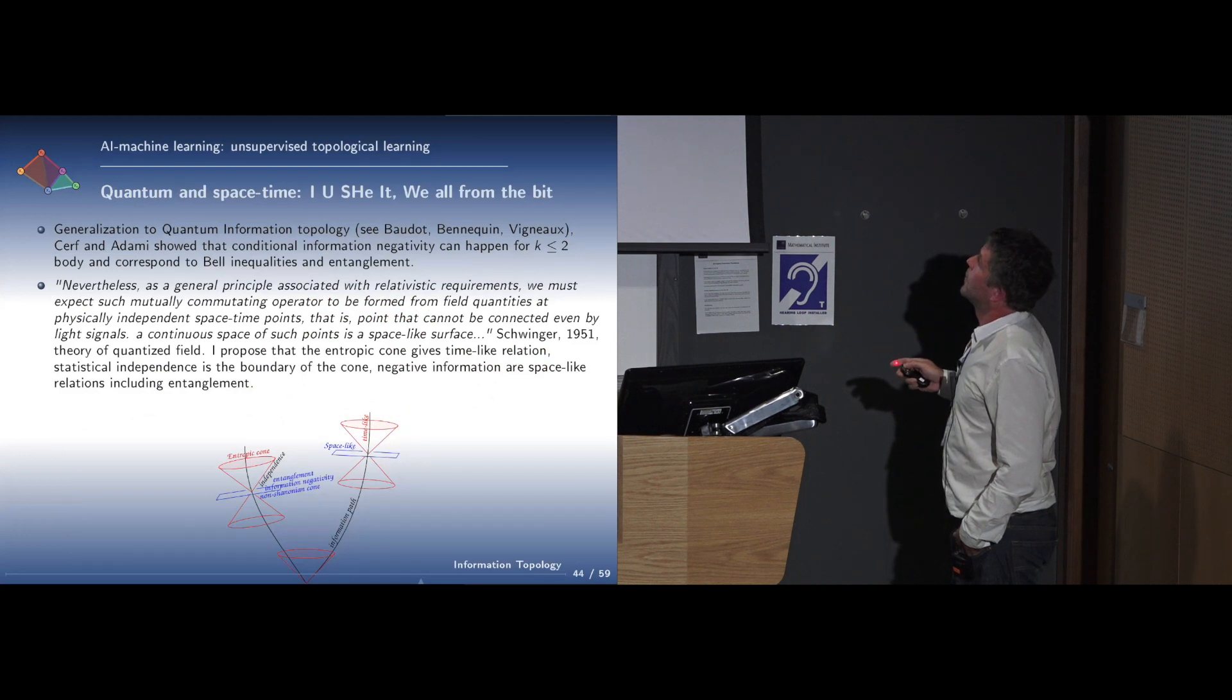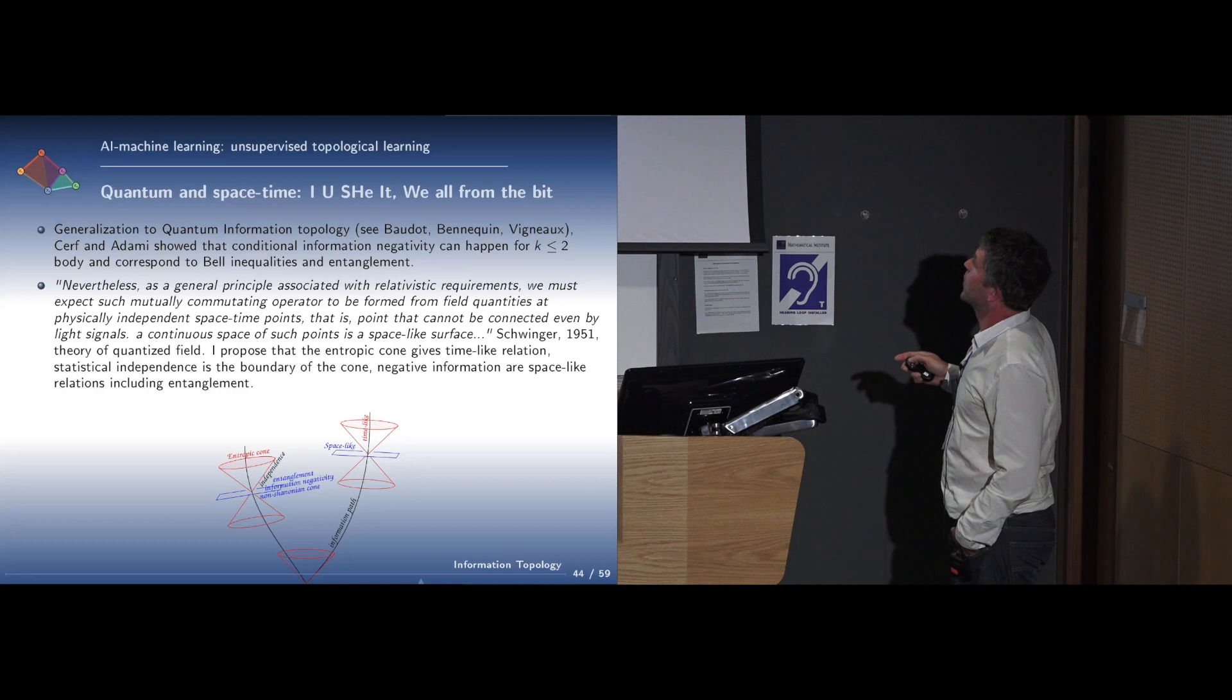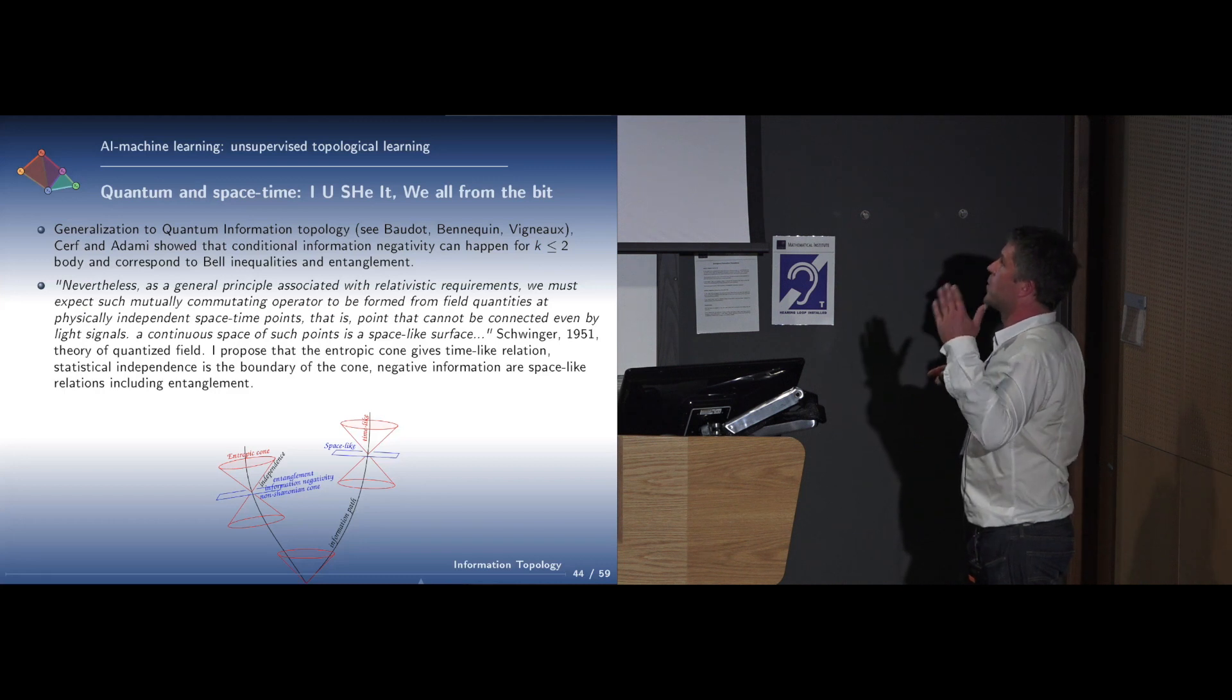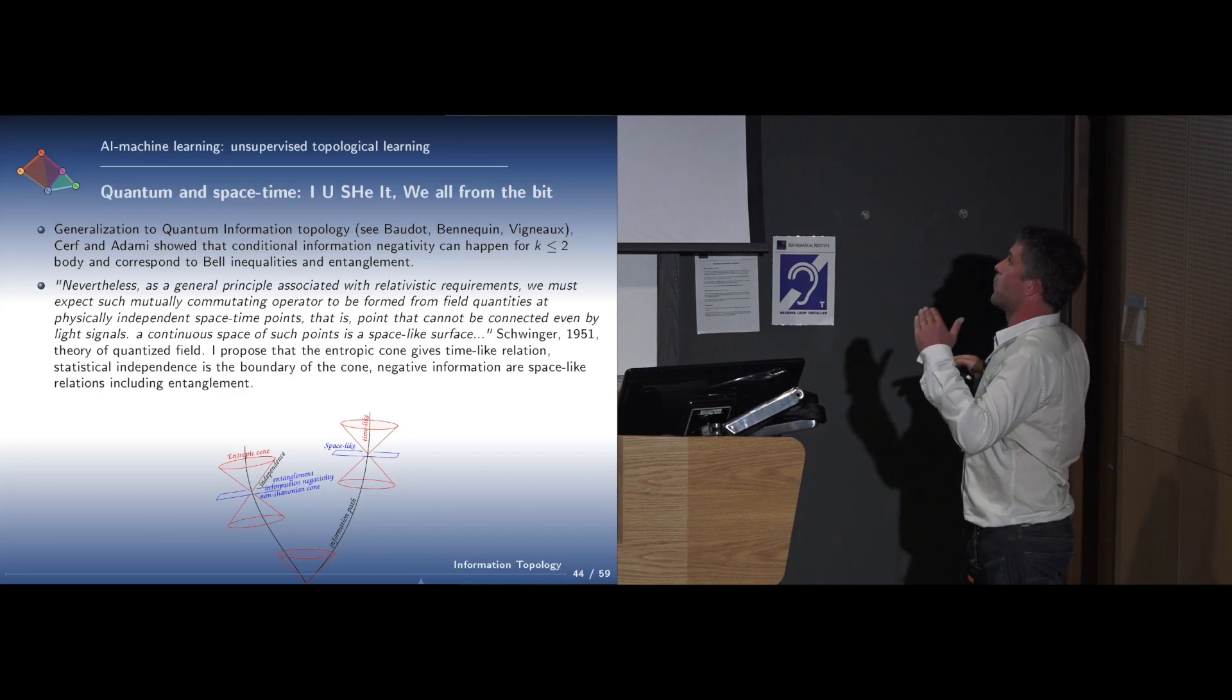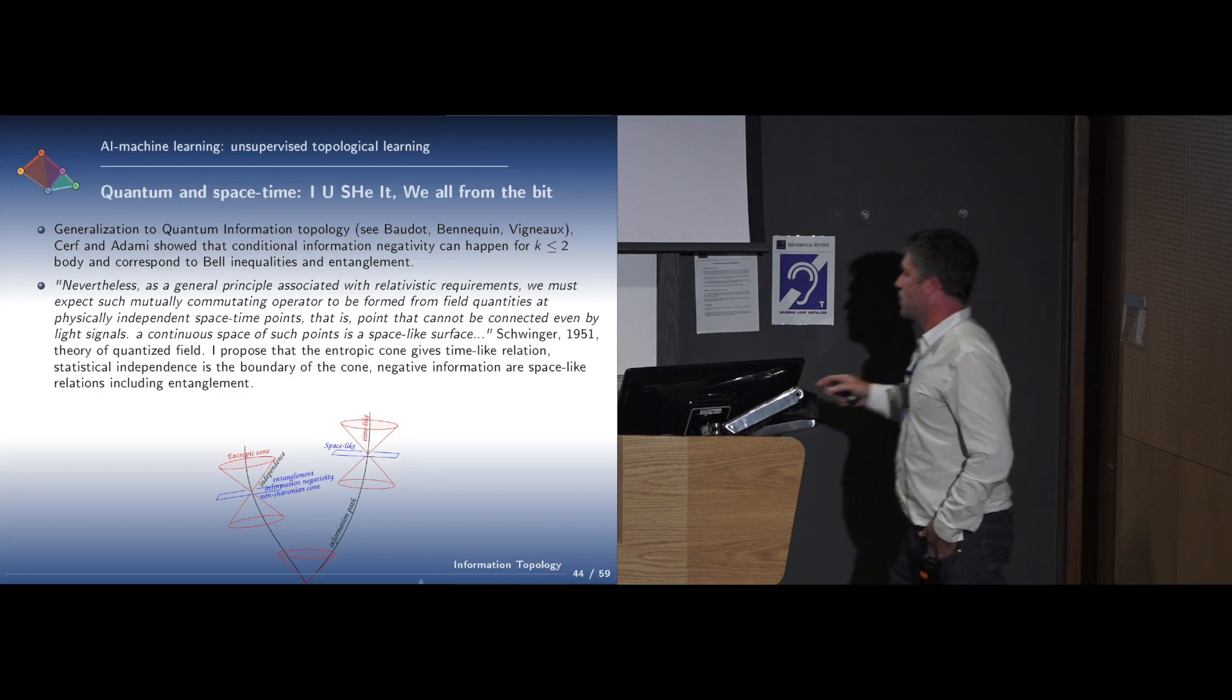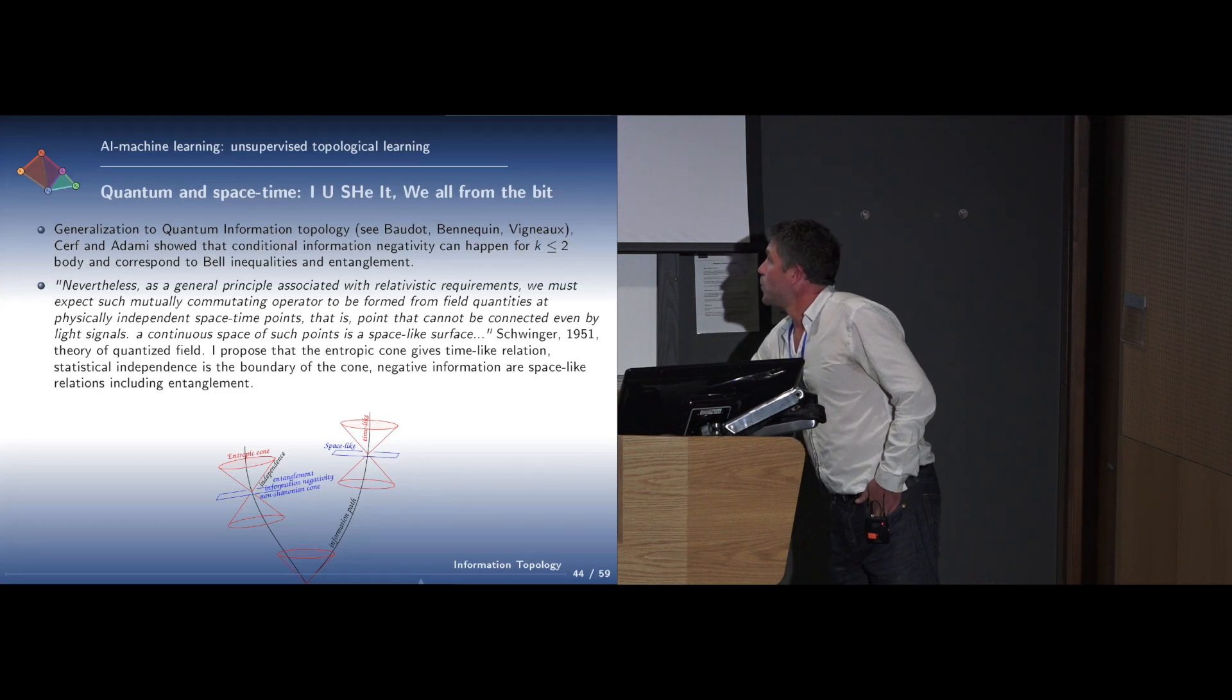I know that many people here are interested in quantum. There is a generalization to quantum information topology cohomology, notably that we did with Daniel, but Vigneault also did stuff. Very importantly, Serra and Adami showed that the conditional information negativity can happen for K below 2, in the quantum case, for two-body, and that it corresponds exactly to Bell inequalities and entanglement. Going to relation to space-time, following Schwinger, I can propose, this is purely conjectural, that space-like relations are a kind of independence or negative information relations, and that time-like relations are entropic positive-like relations.